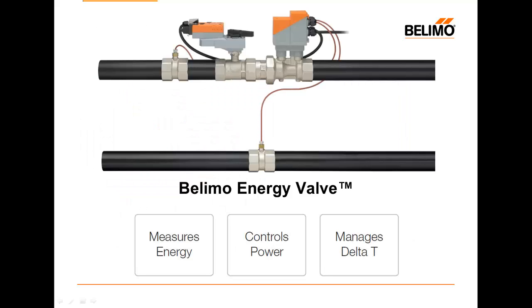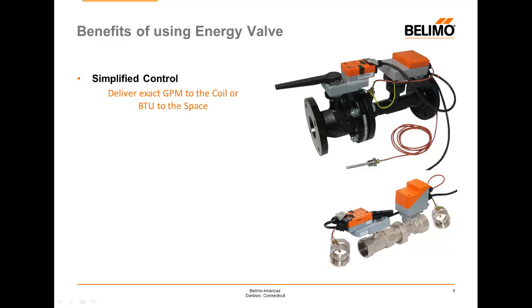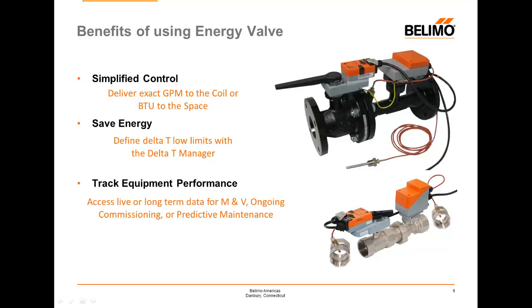Let's go ahead and talk about the Bilemo energy valve. The Bilemo energy valve can do several things: it measures energy, it controls power, and it manages delta T. The Bilemo energy valve is a pressure independent valve with a fully integrated BTU meter. It has several benefits: we can simplify the total control strategy, deliver the exact amount of GPMs or BTUH required, save energy by using less water to satisfy the same load, and track equipment performance. The Bilemo energy valve has a fully integrated onboard BTU meter and a full BACnet communication module, meaning measurement and verification can come directly from your control valve.